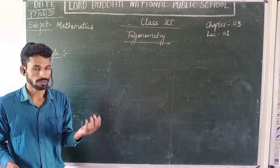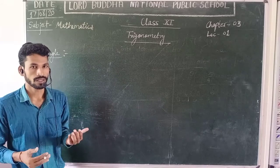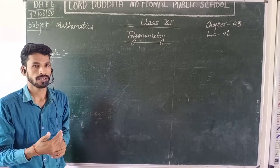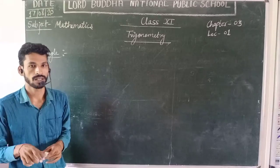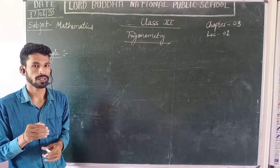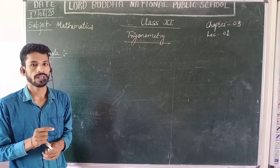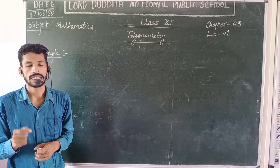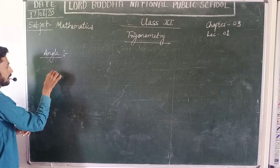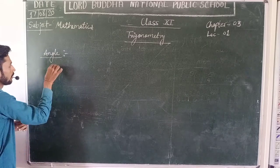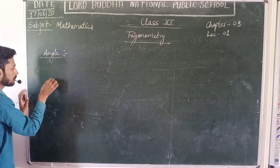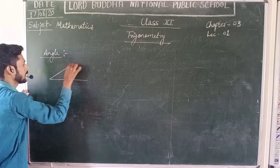According to the geometrical topic, we have also discussed in class 10 how many types of Angles. But in this video lecture and in this chapter, according to Trigonometry, we will start the types of Angle. And this Angle can be two types: first, Angle of Elevation.